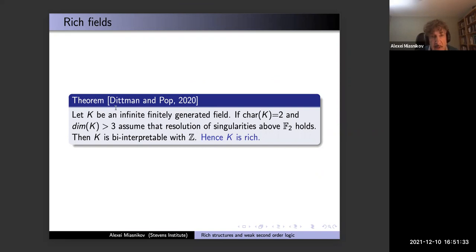Ditmann and Pop, also about a year ago, published a beautiful result answering some open questions: any infinite finitely generated field is rich, unless the characteristic is two and some resolution-of-singularities condition fails above F_2. So except for a few exceptions, every finitely generated field is rich — for example all number fields (finite algebraic extensions of Q) and rings of algebraic integers are rich.